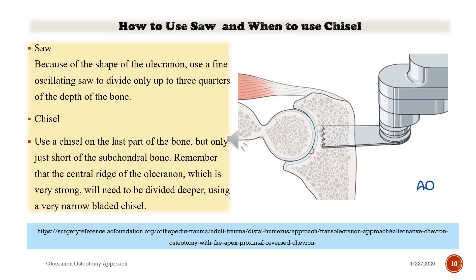How to use the saw and when to use the chisel: because of the shape of the olecranon, use a fine oscillating saw and divide only up to three-quarters of the depth of the bone. Then use a chisel at the end of the procedure on the last portion of bone, but only just short of the subchondral bone.